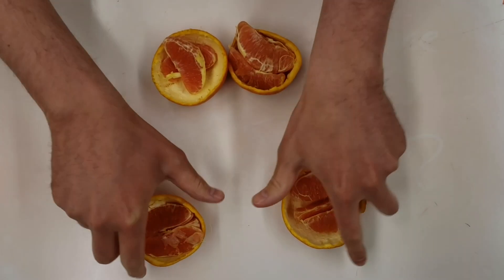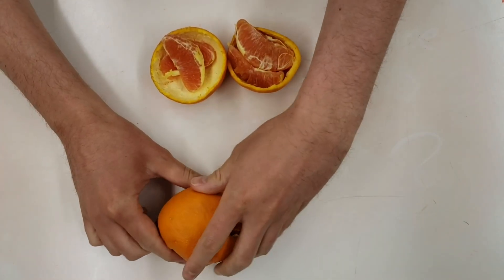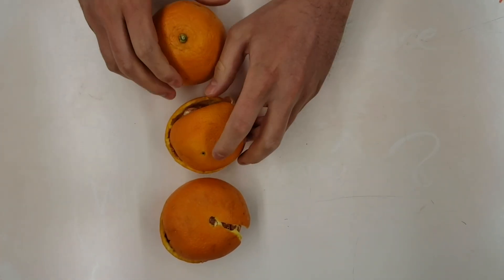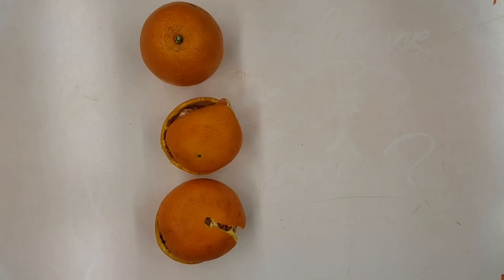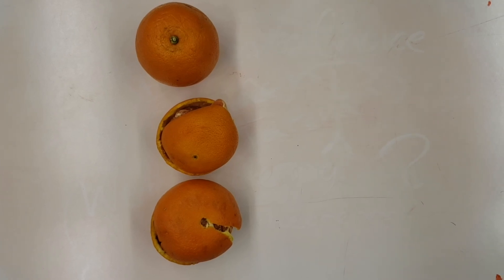It is impossible to create two objects with the same density as the original because objects in the physical world have a finite number of atoms or points. This is why Banach-Tarski is a paradox.